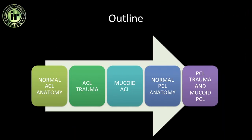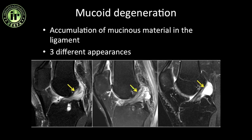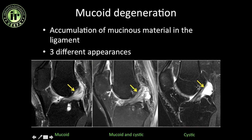Now let us look at the mucoid degeneration of the anterior cruciate ligament. In mucoid degeneration there is accumulation of mucinous material within the ligament, and as a result the ligament can have three different appearances: one is a predominantly mucoid ACL where the ligament is hyperintense and bulky; the second is mucoid ACL along with cystic degeneration or a ganglion cyst forming at the femoral attachment; and the third is a predominantly cystic type where there is a large ganglion cyst at the femoral attachment but the ligament fibers themselves do not show much degeneration.